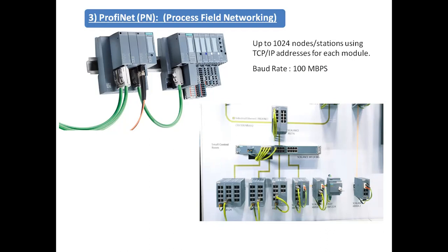We also use fiber optics for longer distance communication. On some Scalance modules you can find OLM — Optical Link Module — fiber optic ports. Using fiber optics you can go up to 15 kilometers from one OLM to another OLM module. After 15 kilometers you can place another OLM at another 15 kilometer distance, and this way you can extend communication to more than 20 to 30 kilometers. These are some of the many advantages of Profinet compared to other protocols.